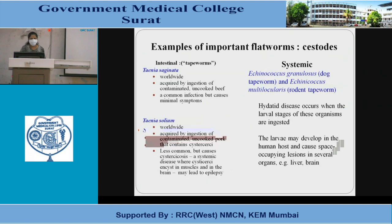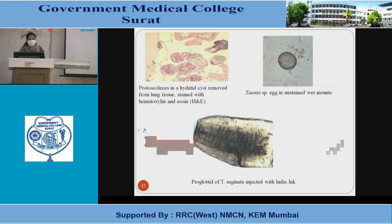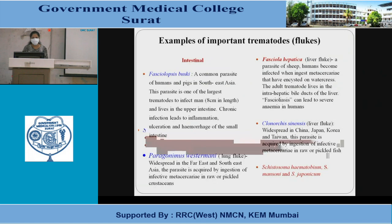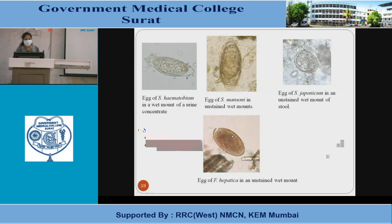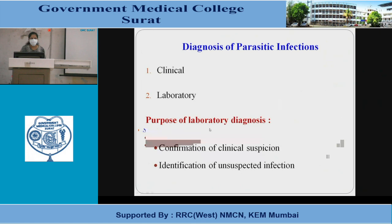Examples of important flatworm cestodes: intestinal forms are Taenia saginata and Taenia solium; systemic forms are Echinococcus granulosus and Echinococcus multilocularis. The figure shows protoscolices in hydatid cysts removed from lung tissue, Taenia species eggs in unstained wet mounts, and proglottids of Taenia saginata injected with India ink. Important trematodes (flukes): intestinal include Fasciolopsis buski, Paragonimus westermani, Fasciola hepatica, and Clonorchis sinensis. Schistosoma haematobium, mansoni and japonicum are also shown, with figures of their eggs.